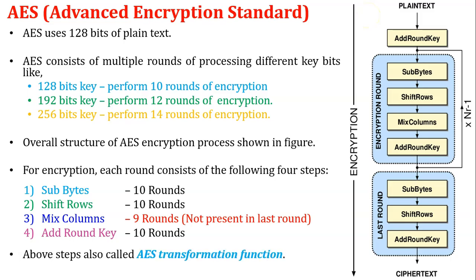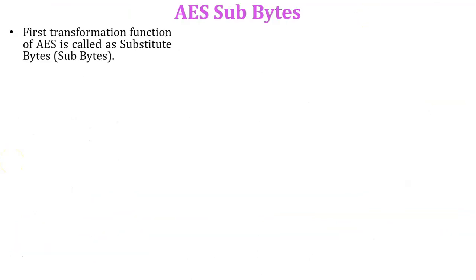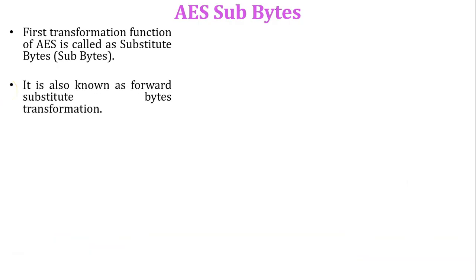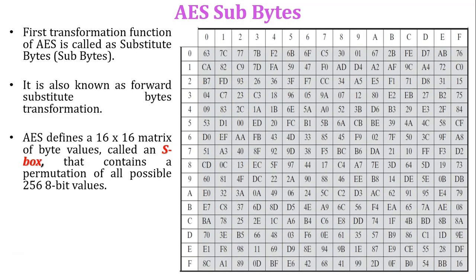In this video, I am going to discuss the AES SubBytes transformation function. The first transformation function of AES is called SubBytes, also known as the forward substitute bytes transformation. AES defines a 16×16 matrix of byte values called an S-Box, which contains a permutation of all possible 256 8-bit values. This table is called the S-Box.